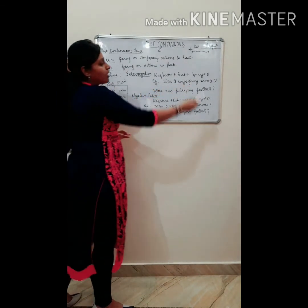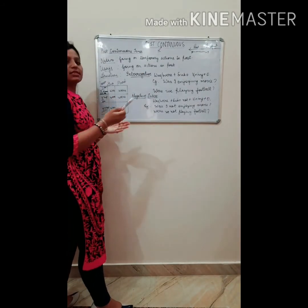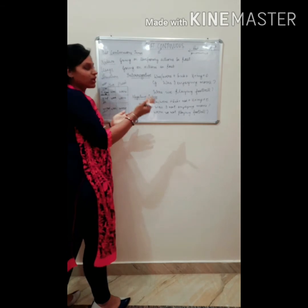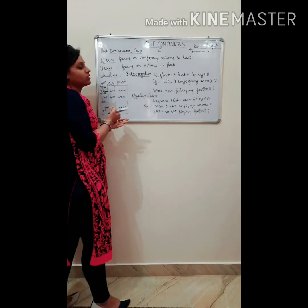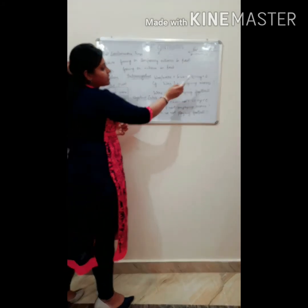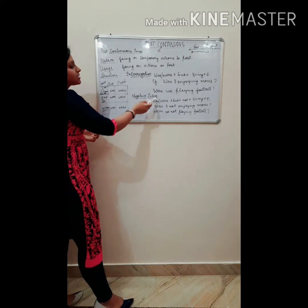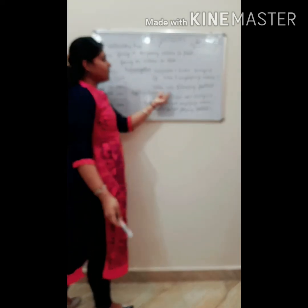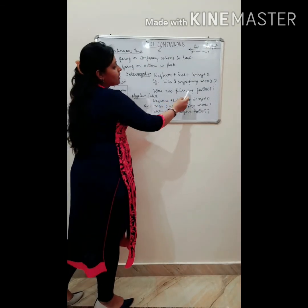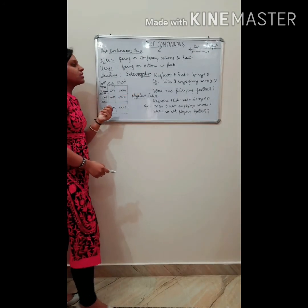Look at the example: 'Was I enjoying movie?' The simple sentence was 'I was enjoying movie,' but in interrogative I bring 'was' before the subject: 'Was I enjoying movie?' The rest of the sentence stays the same — 'I' is same, 'enjoying' is same, object is same. Next: 'Were we playing football?' Bring 'were' ahead and shift 'we' to second position. You have to just bring the helping verb ahead.